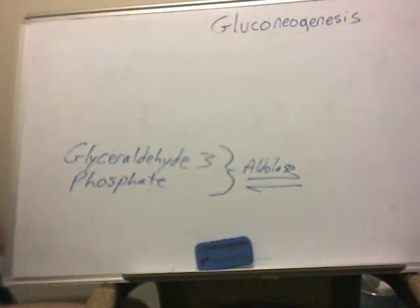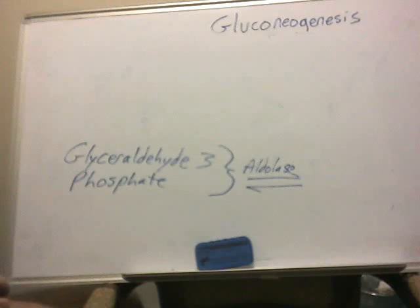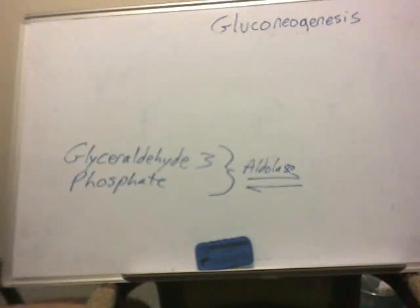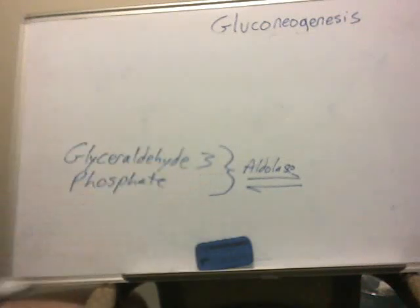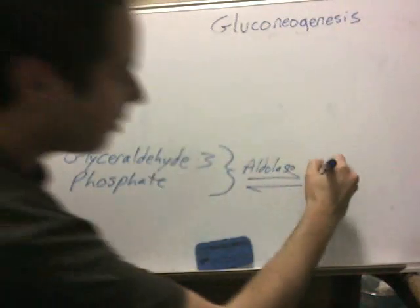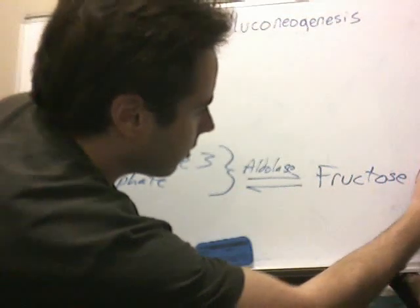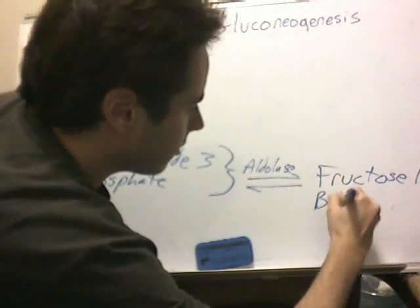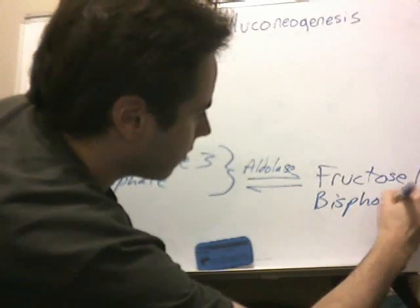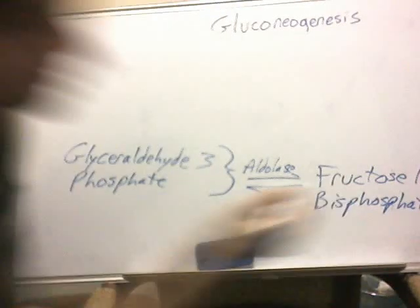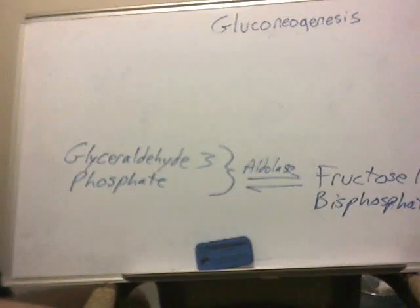So like I said in the beginning, oxaloacetate and pyruvate are precursors to amino acids. Glyceraldehyde-3-phosphate can be used as a precursor for glycerol. The aldolase will take it to fructose 1,6-bisphosphate, which looks familiar — that was in glycolysis.